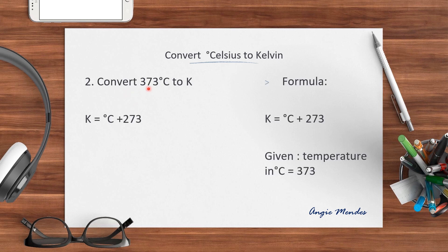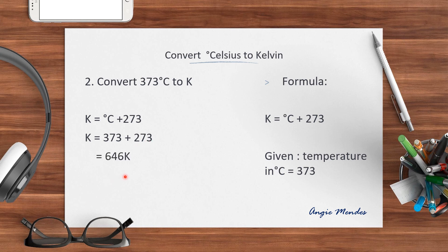Let us take another example. We will see how to convert 373 degrees Celsius to Kelvin. Again we are taking the same formula which is K is equal to degree Celsius plus 273. We are given the temperature in degrees Celsius which is 373. Substituting the value, we get K is equal to 373 plus 273, which gives us 646 Kelvin.